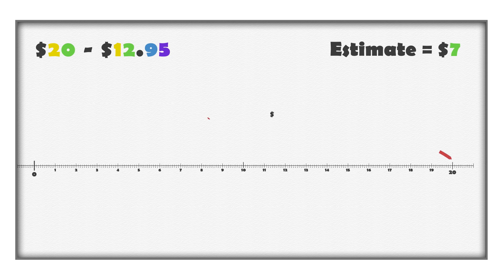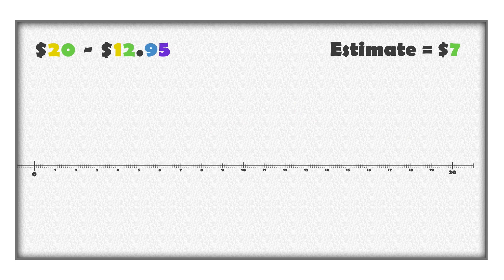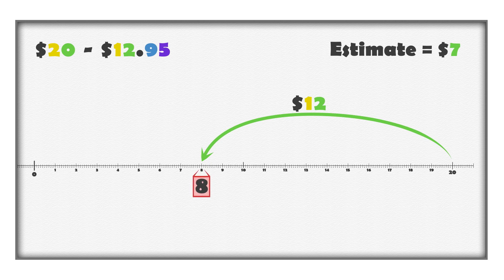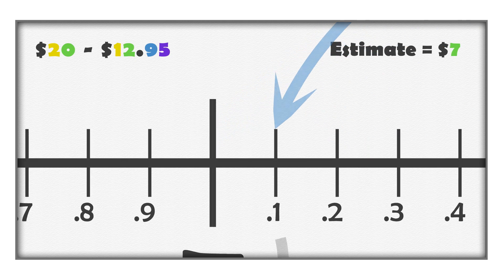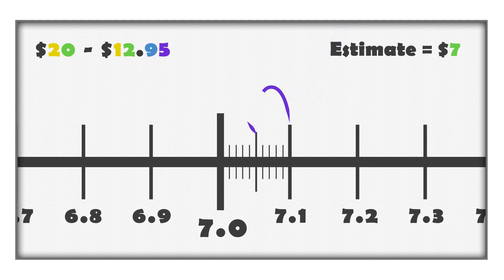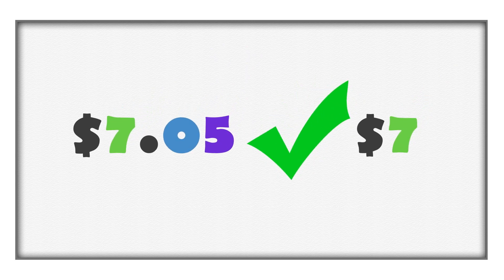To find the exact amount of money left on the card, we have to subtract. We can use a number line to represent this. Start by subtracting 12, which is the same as moving 12 spaces to the left — we are now at 8 on the number line. Subtracting 95 cents is the same as subtracting 9 tenths of a dollar and 5 hundredths of a dollar. When we move 9 tenths to the left of 8, we get 7 and 1 tenth. When we move 5 hundredths to the left, we get to 7 and 5 hundredths. There will be $7.05 left on the gift card.